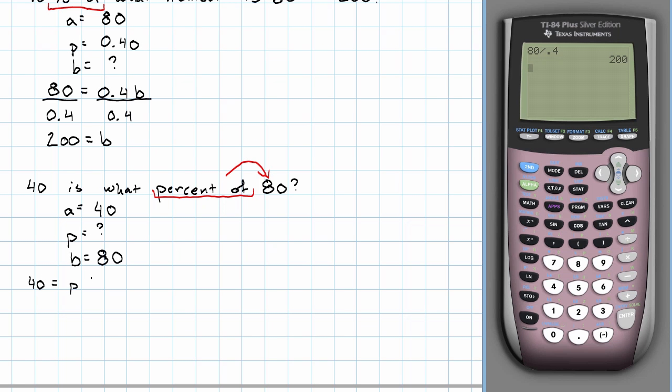So now our equation is 40 equals our unknown percent times 80. We could write that as 40 is 80 times our unknown percent. Divide by 80, and we get 0.5 equals our unknown percent. Converting that to a percent, we get 50%. 40 is 50% of 80.